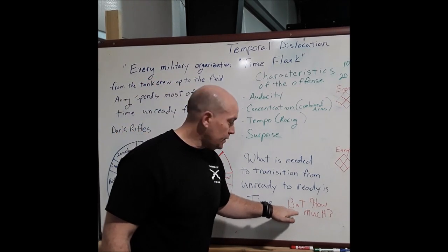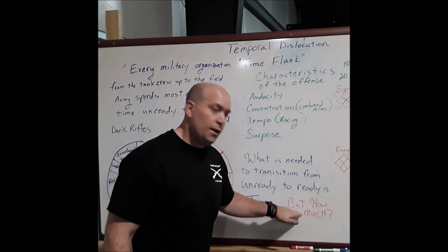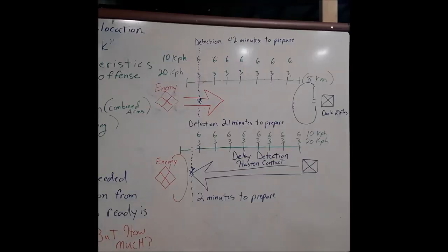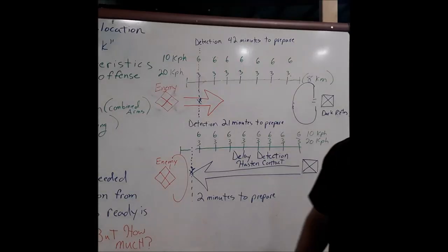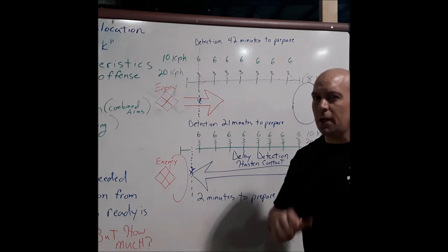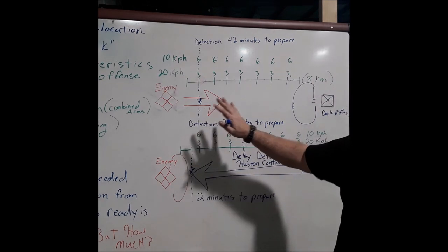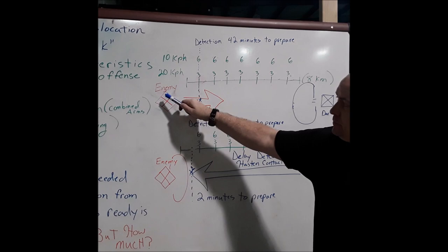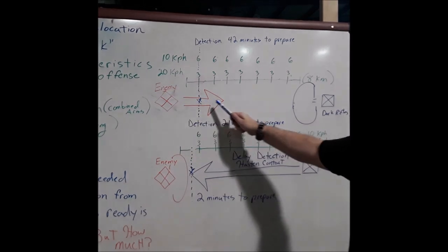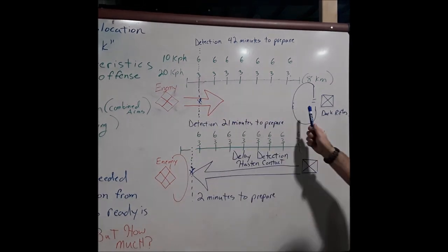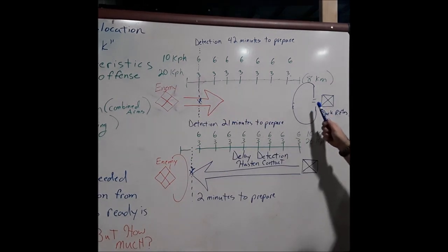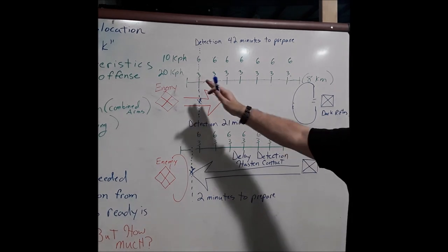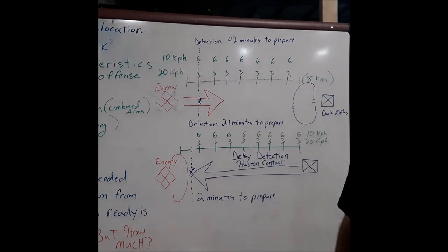What's more important is how much time. Really, it's all about a battle for detection. In this diagram, the enemy is moving along to attack us, and here we are in our defensive battle position — separated by eight kilometers.